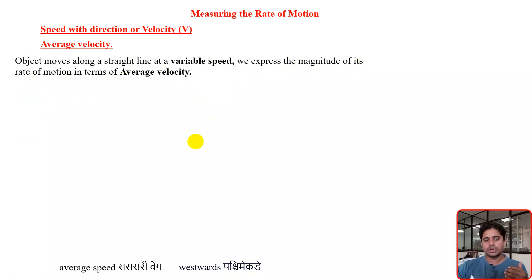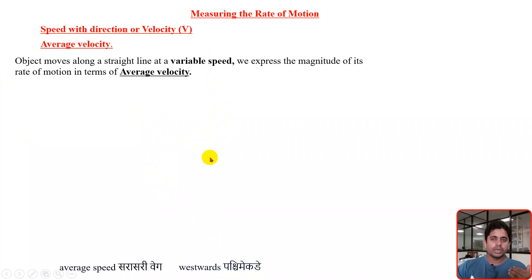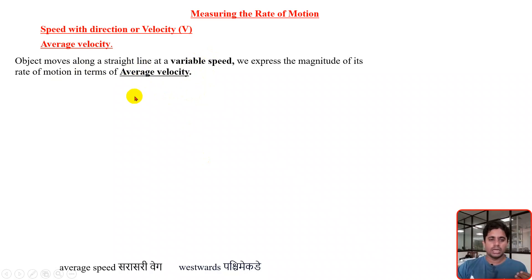When will you use the term average velocity? Suppose there is one object and that object is traveling along a straight line, along a straight path, but the speed of that object is varying. Varying in the sense — just like a car while traveling on the road or on highways, we will vary the speed. Sometimes we increase the speed, sometimes we decrease the speed, sometimes we keep the speed constant. So there is much variation in the speed. Whenever that object does that variation in speed along a straight line path, that is where we will use the term average velocity.